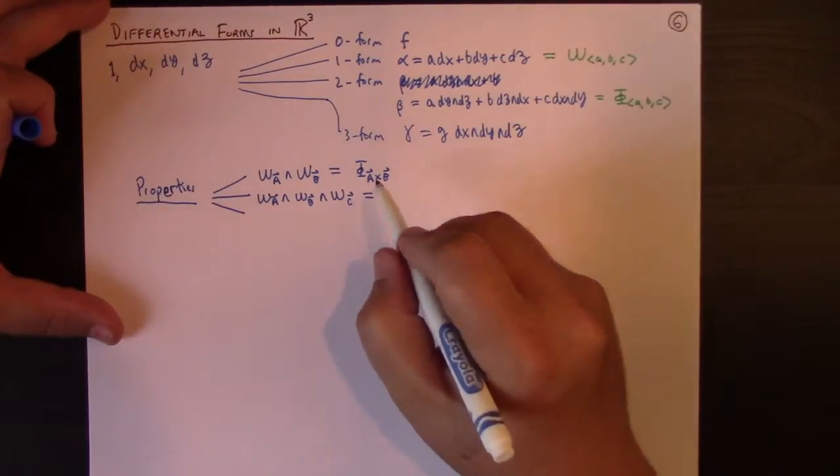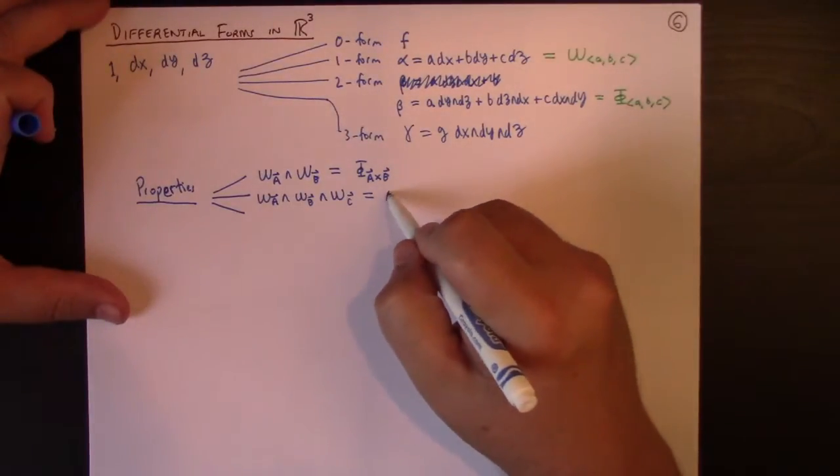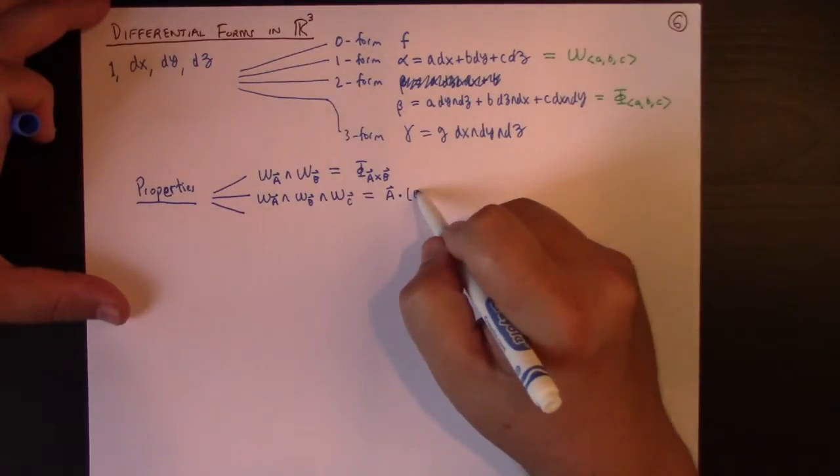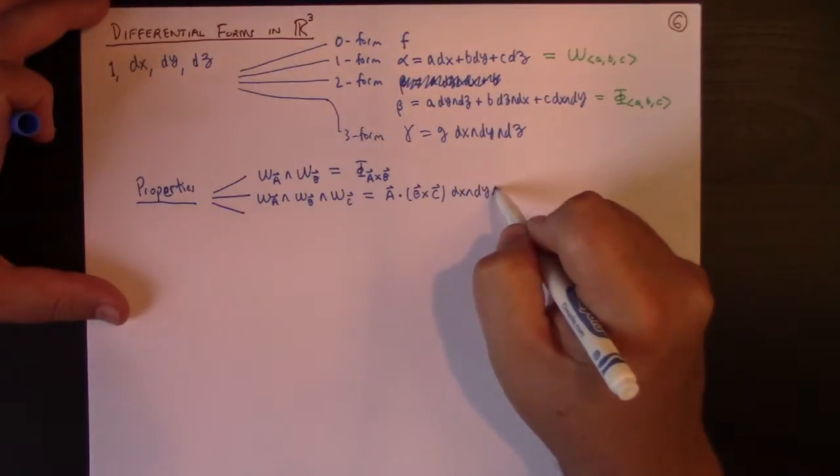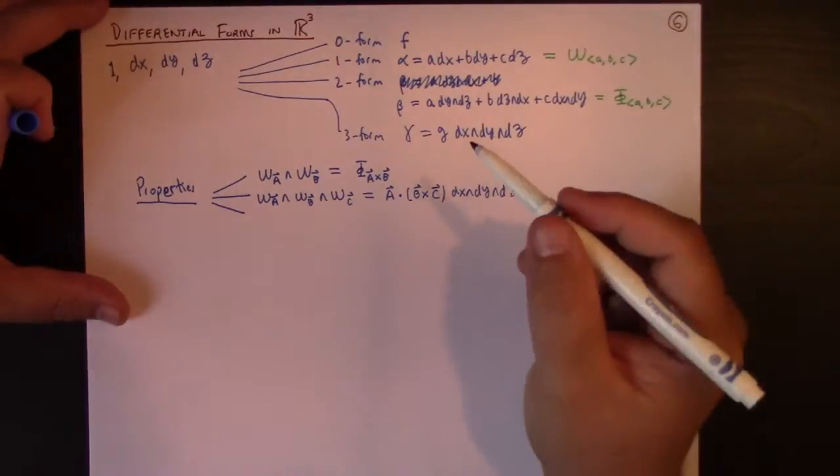Also, if we take the wedge product of omega A, omega B, omega C, what I get then is I get the triple product. I get A dot B cross C dx wedge dy wedge dz.